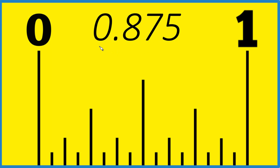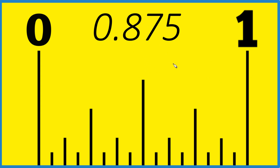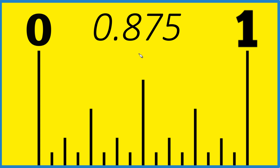Let's find the decimal 0.875 on our ruler or tape measure here. We want to know what 0.875 is as a fraction of an inch. Here's one inch right here. The tall mark in the middle is one half, or 0.5.